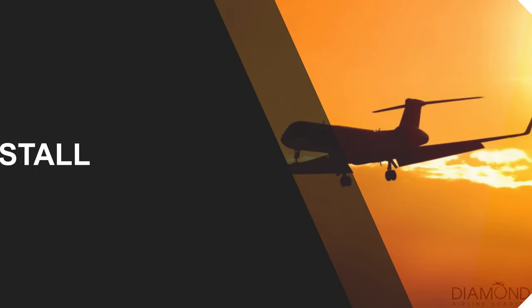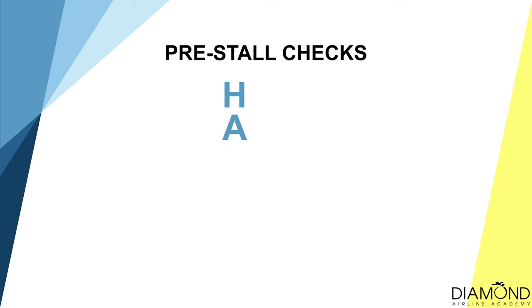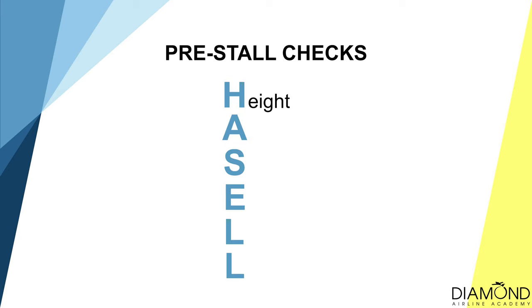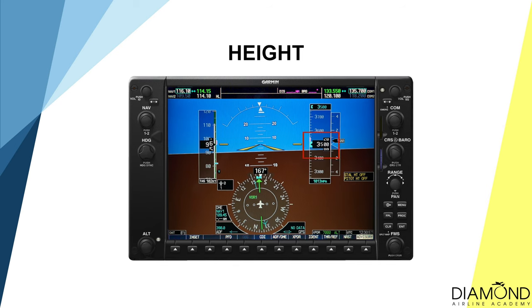Before practising stalls, there is a checklist to be completed — this is called the HASEL check: H-A-S-E-L-L. Height, Airframe, Security, Engine, Location, Lookout. We have to ensure the stall recovery is completed by 3,000 feet above ground level, so 3,500 feet would be a normal starting point for stall practice. For Airframe, we must ensure that the fuel, the wings, and the aircraft structure are in normal condition.